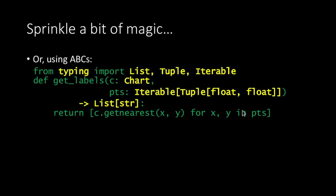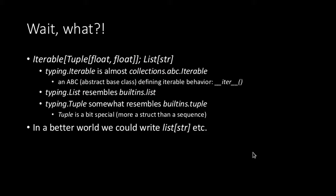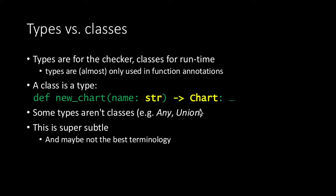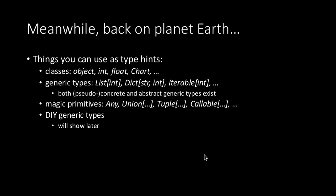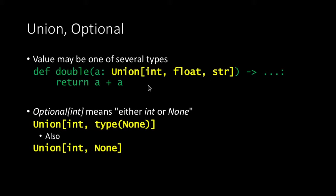If you want to iterate over some stuff, instead of just saying it's a list, it can now be any iterable as long as it returns a tuple with two floats — that's a better representation of what we look for. We can also return a class, and a class is a type. So wherever we put a type like int or string, we can put any class of our own. Now let's look at 'any' and 'union' — a should be either an int, a float, or a string.